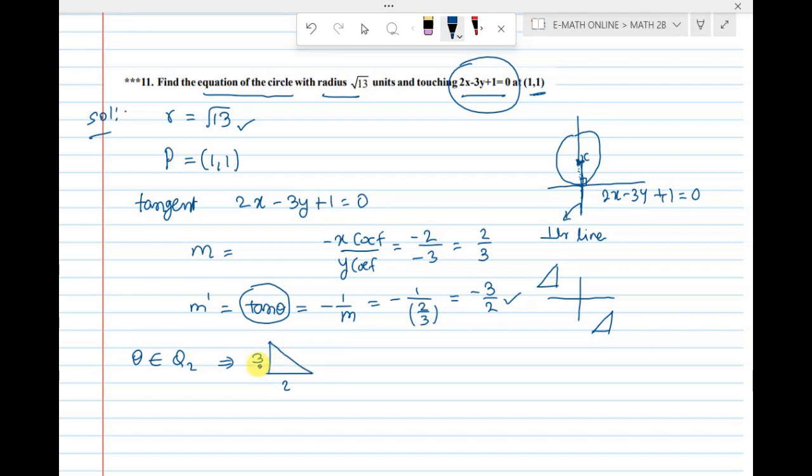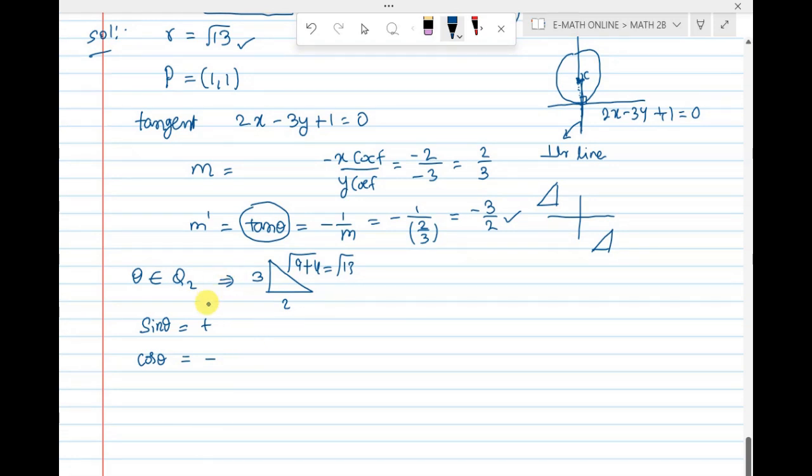From this triangle, we need hypotenuse. Hypotenuse is side square plus side square. 3 square is 9 plus 2 square is 4 which is root 13. In second quadrant, sin theta positive, cos theta negative. Sin is opposite by hypotenuse, 3 by root 13. Cos is adjacent by hypotenuse, minus 2 by root 13.